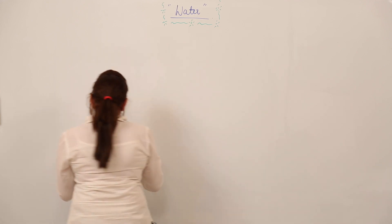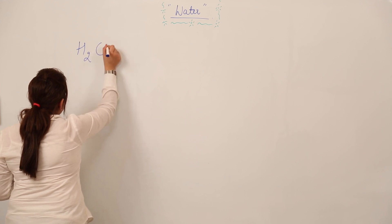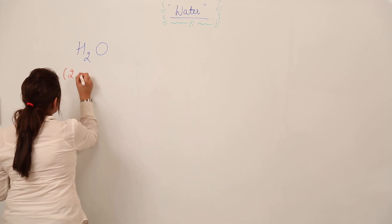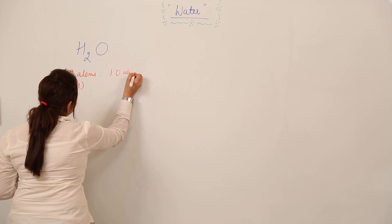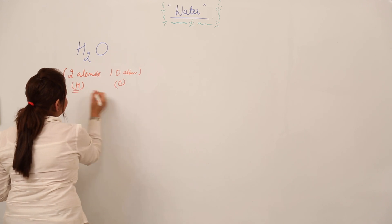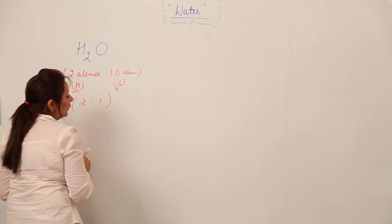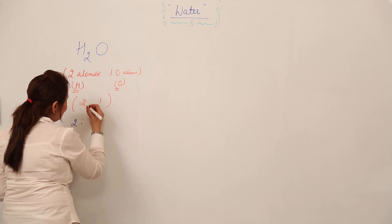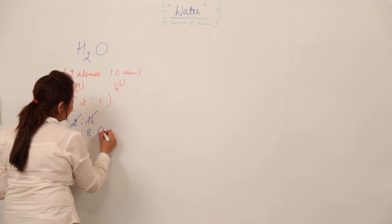First we should know what water is. The formula for water is H₂O — it contains two hydrogen atoms and one oxygen atom. The ratio of their volume is 2:1. For the ratio of their masses: hydrogen's mass is 1, so 1×2 = 2, and oxygen is 16 with one atom, so the mass ratio simplifies to 1:8.